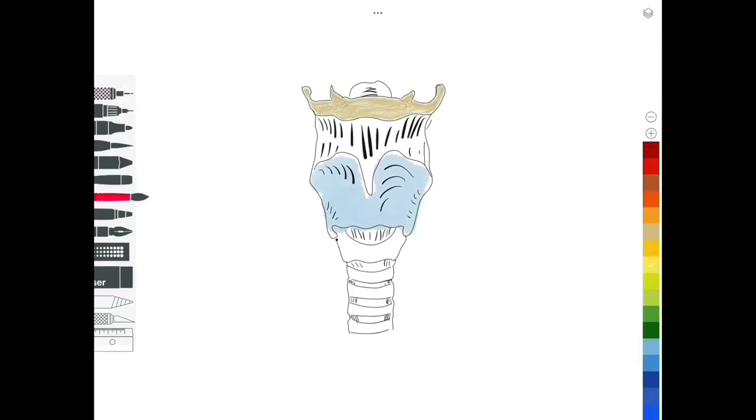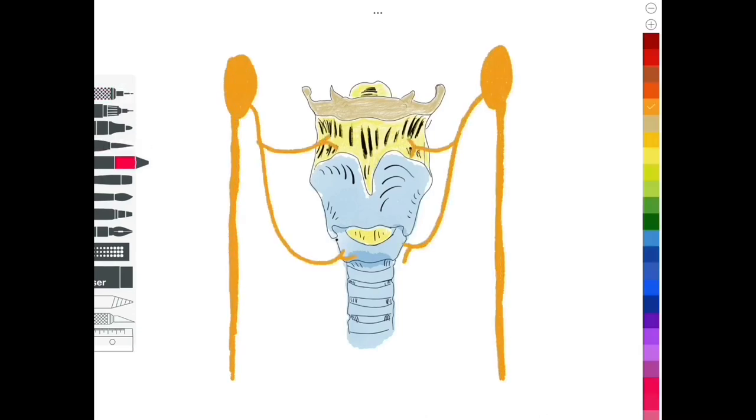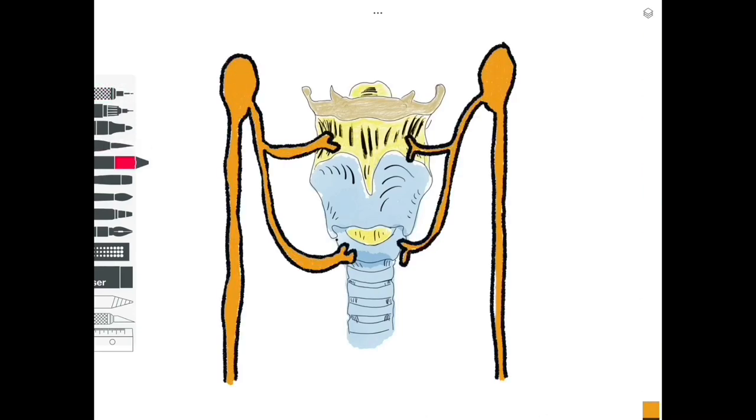We have the hyoid bone at the top colored in a gold color. We have in blue the thyroid cartilage, we have the cricoid cartilage as well, and we also have the trachea. There's a membrane that stretches between the hyoid bone and the thyroid cartilage called the thyrohyoid membrane.